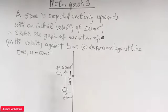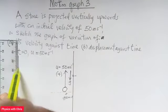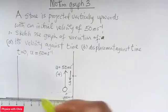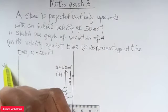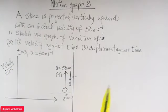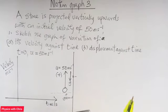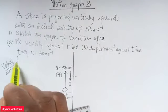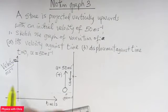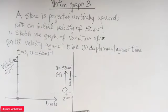So when I draw or sketch my velocity-time graph, the vertical axis will have velocity in meters per second, and the horizontal axis will have time in seconds. Always include the units of the quantity represented on the axis. The graph will start from 50 meters per second on the velocity axis at t equals 0.